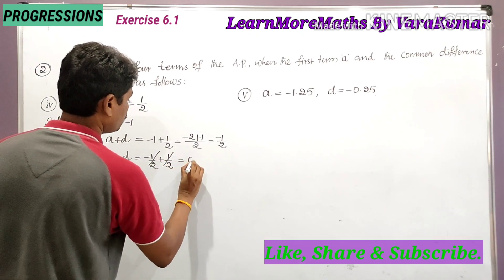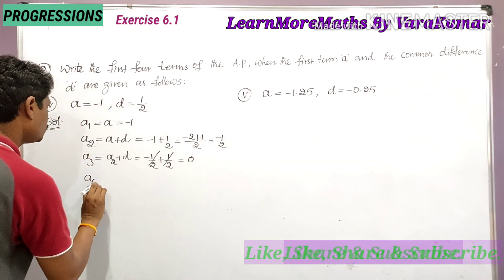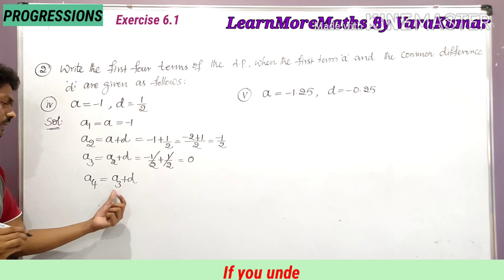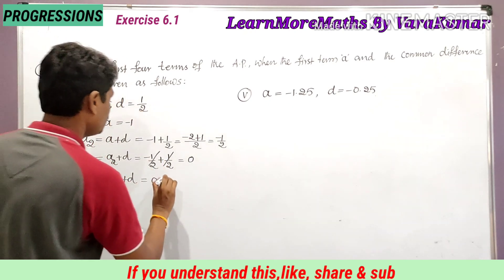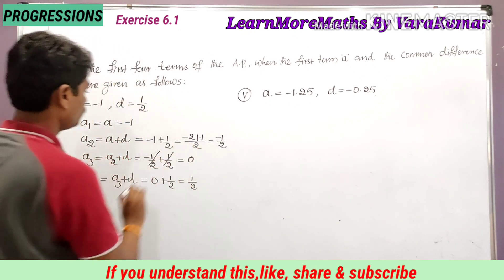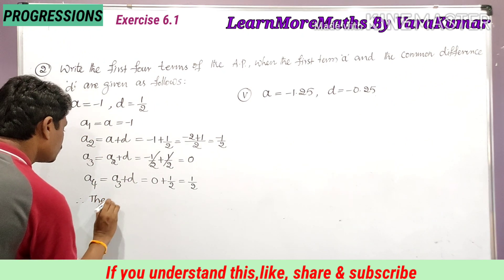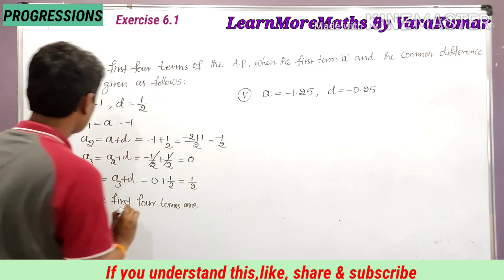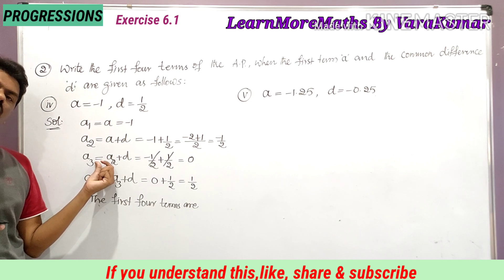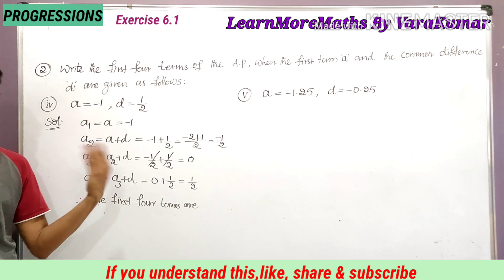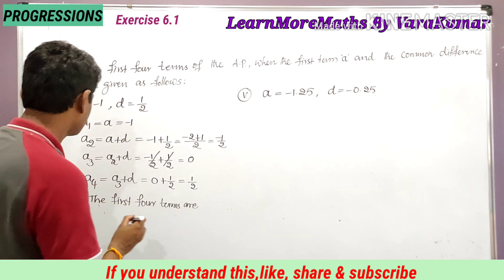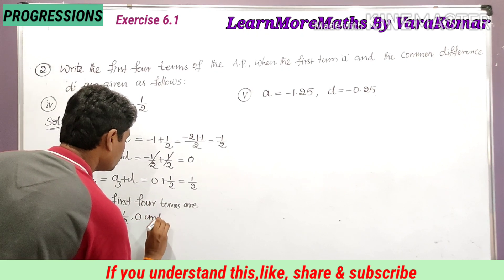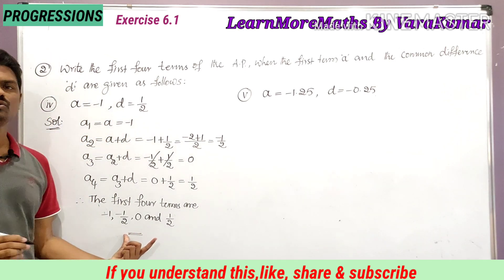The third term a3 is equal to a2 plus d, so minus 1 by 2 plus 1 by 2, which gives 0. The fourth term a4 is equal to a3 plus d, so 0 plus 1 by 2, which is 1 by 2. We can also write a3 as a plus 2d by substituting the values directly. Therefore the first four terms are minus 1, minus 1 by 2, 0, and 1 by 2.